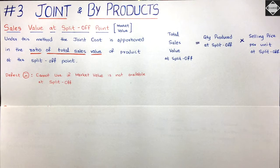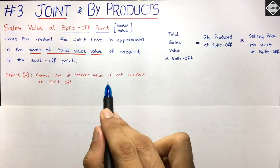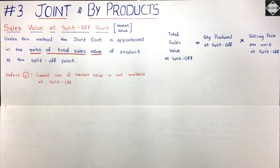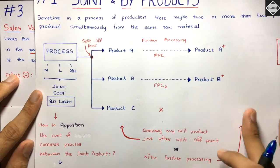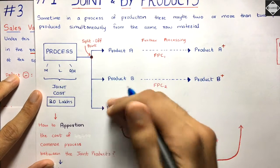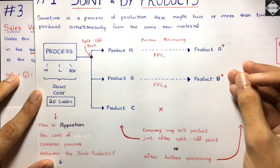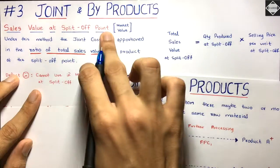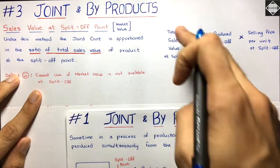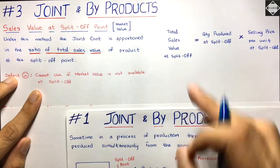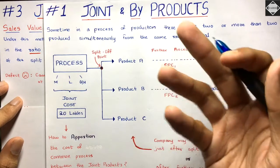The disadvantage of this variant is that it cannot be used if the market value or sales value is not available at the split off point. Sometimes a product cannot be sold at the split off stage — it must be further processed before it can be sold. In that situation, this variant cannot be applied because you need the selling price per unit at split off to calculate the sales value.